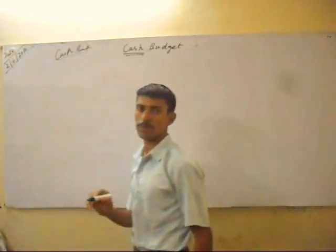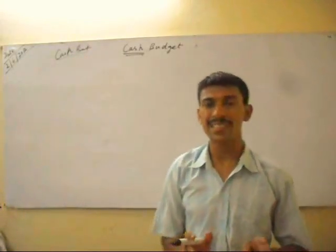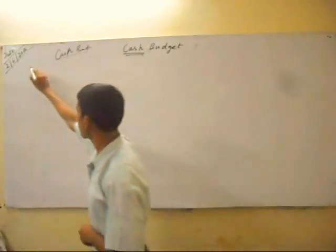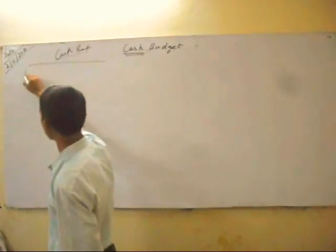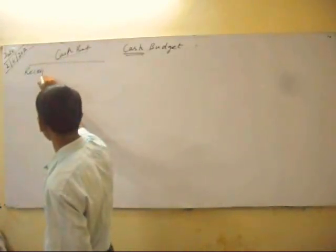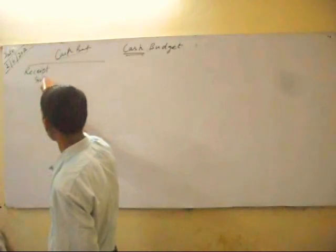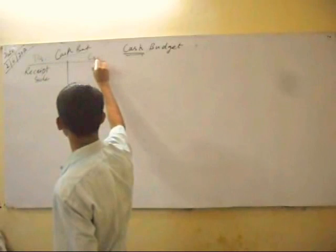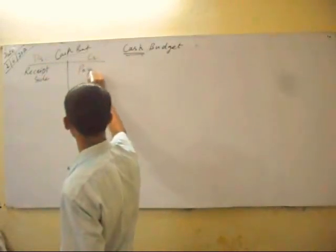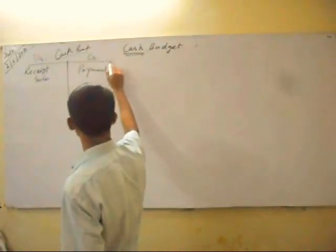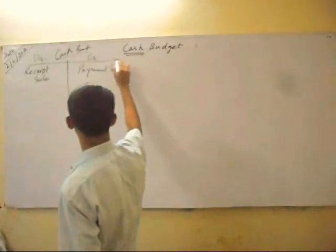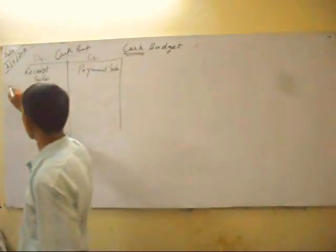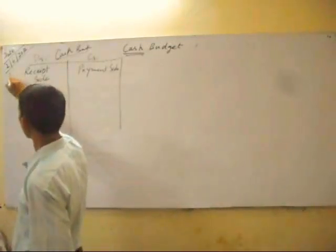What is this cash book? Cash book is the historical detail of receipts and payments. This is the receipts side — the debit side — and this is the credit side, the payments side. This is historical details of your sales.